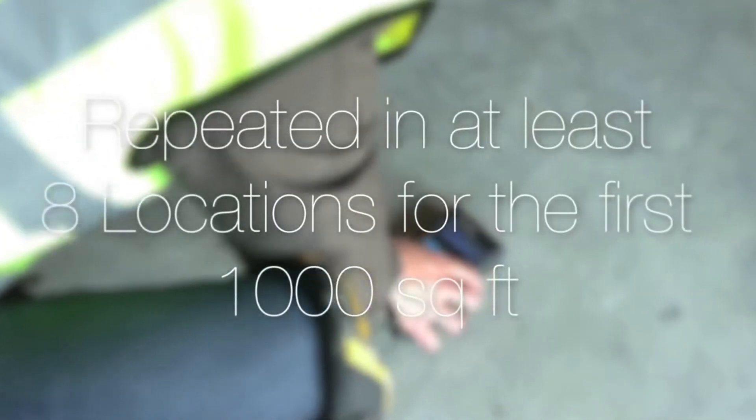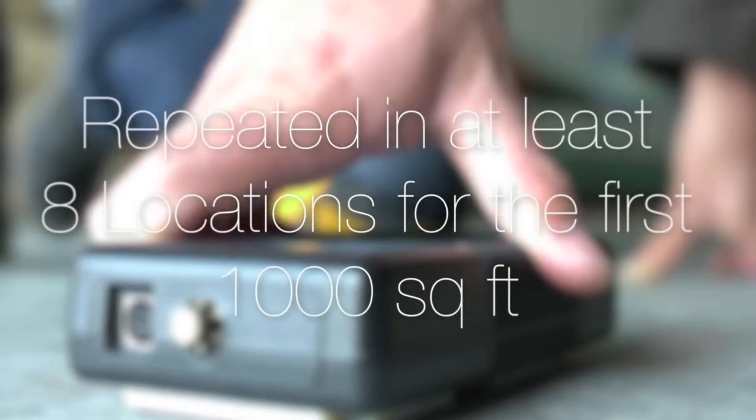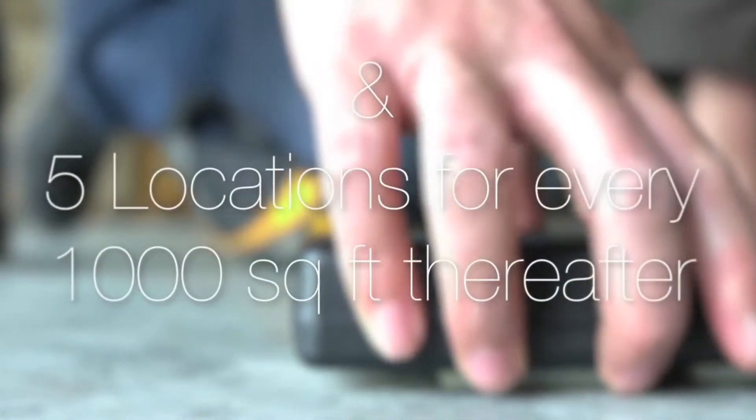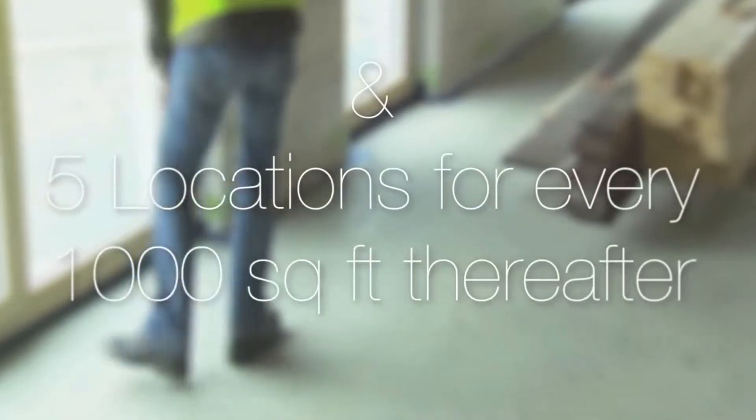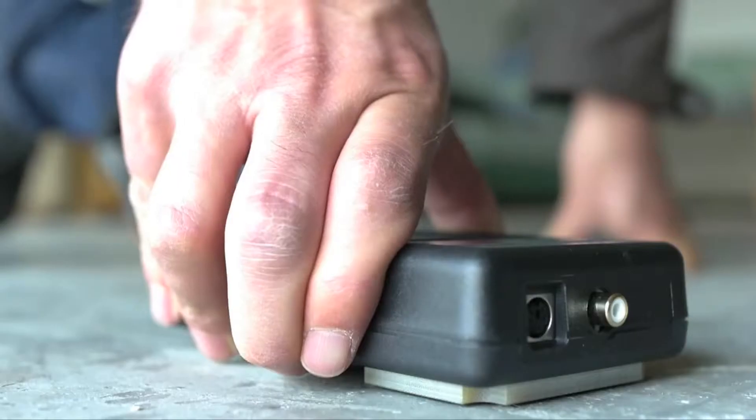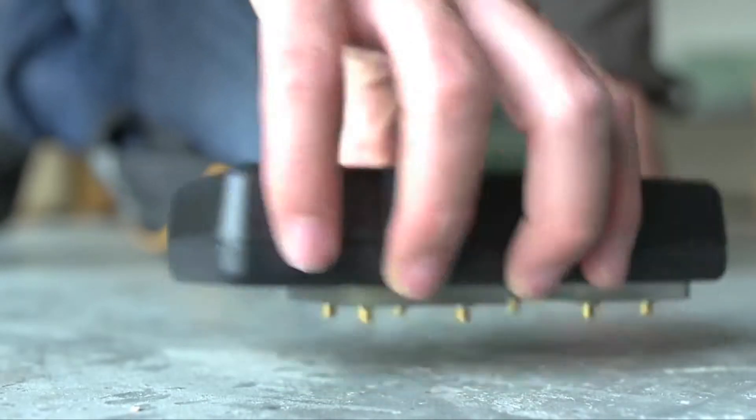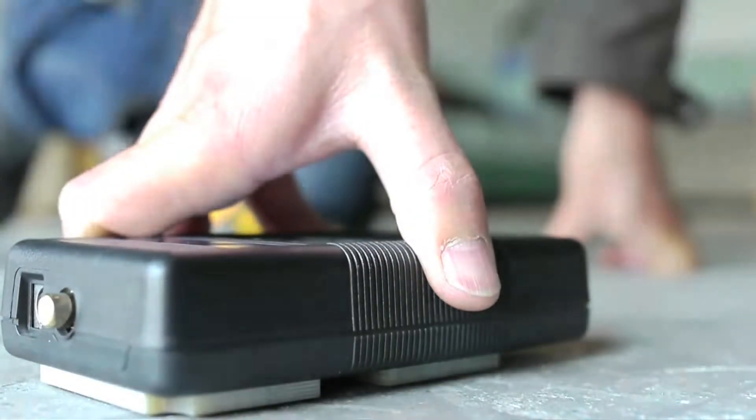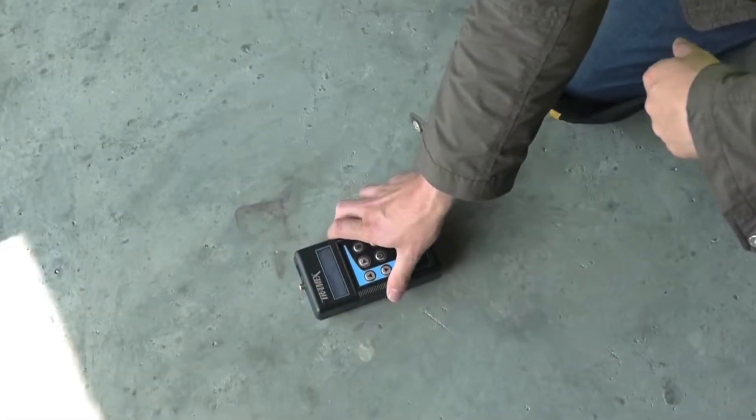This is repeated in at least eight locations for the first 1000 square feet and five for every 1000 square feet thereafter, allowing the user to build up a moisture map of the entire slab and identify when and where to test further, if testing for example to ASTM F2170.